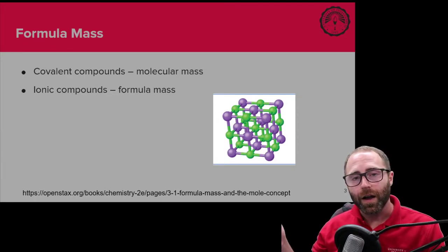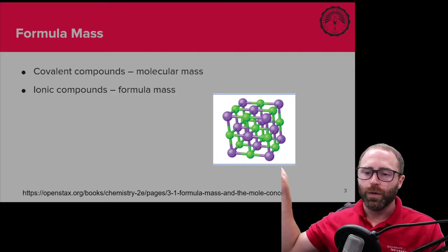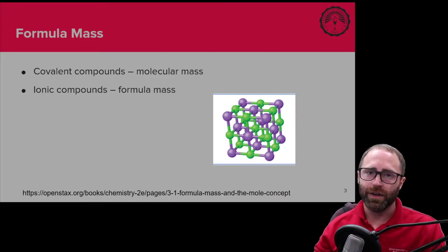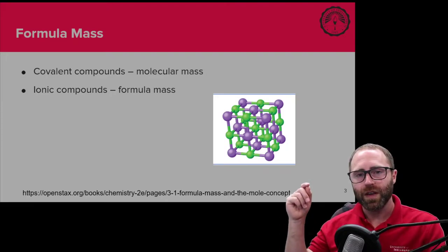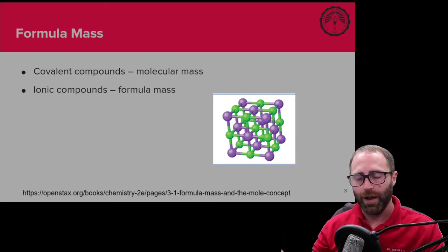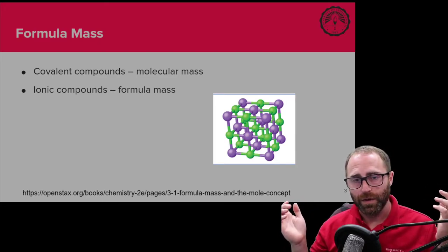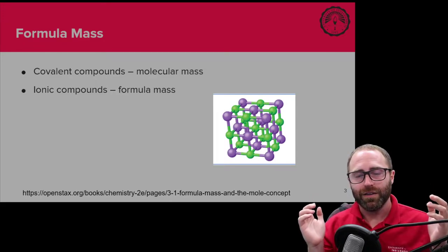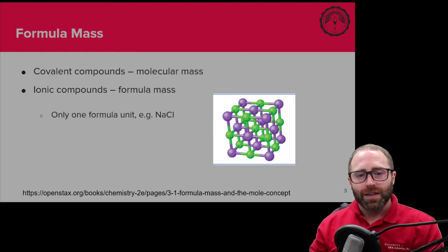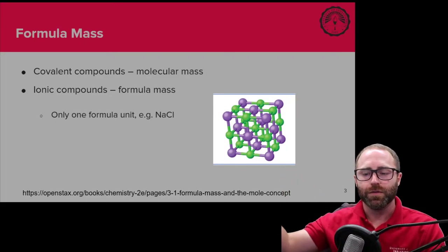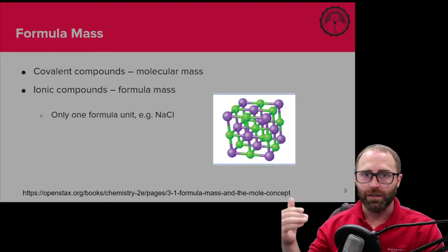The difference for ionic compounds is illustrated by the crystal structure of sodium chloride. You don't ever have just a single sodium ion interacting with a single chloride ion — you have this repeating 3D structure. Because it repeats and repeats, we say: what's the smallest ratio of one ion to the other? That becomes our formula unit. For sodium chloride, it's a one-to-one ratio of sodium to chloride.